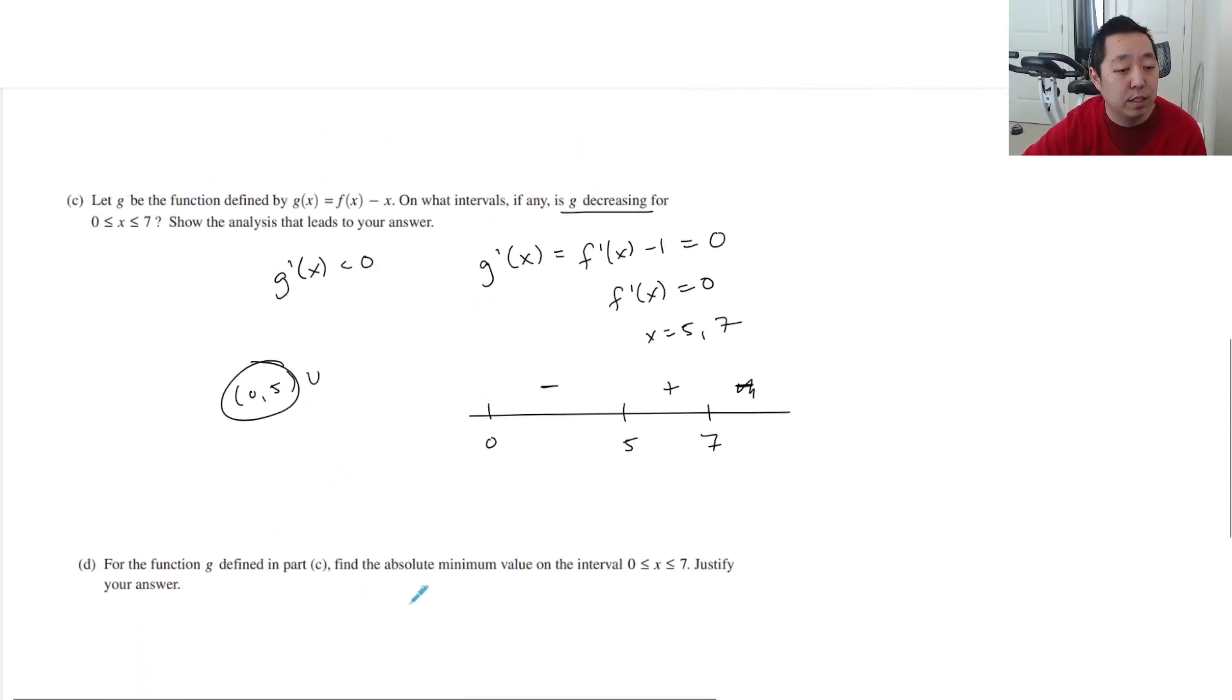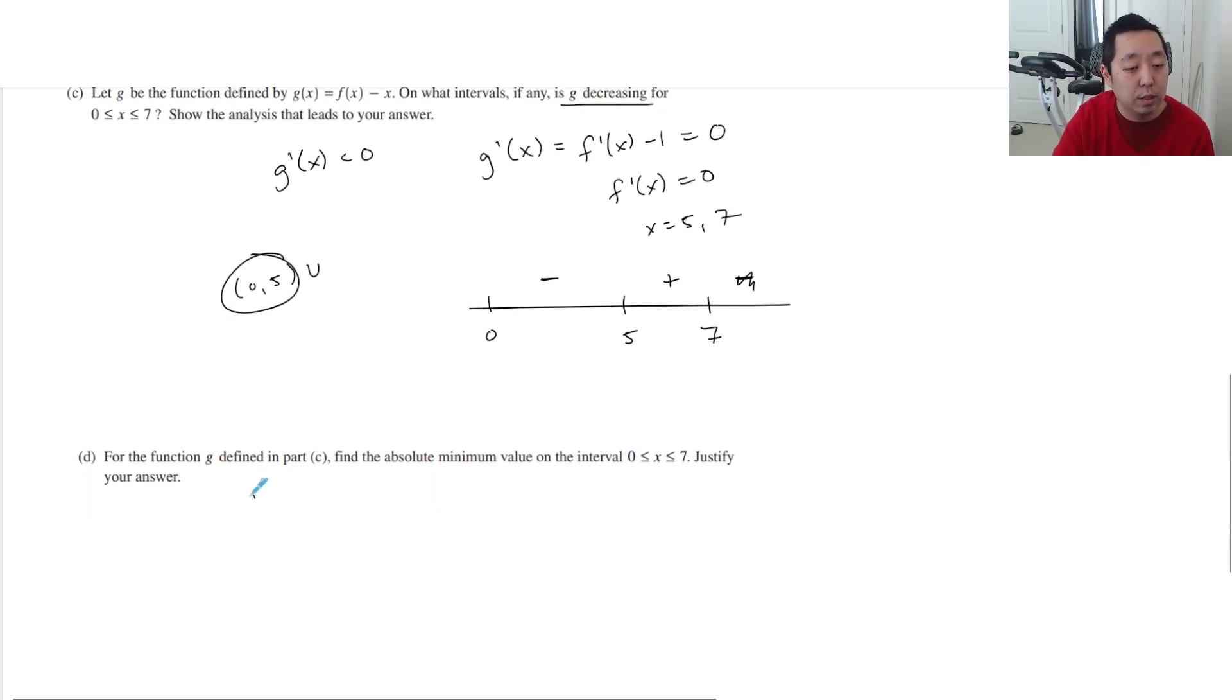For the function defined in part c, find the absolute minimum value of this interval. So what we want to do is we want to compute g. We want to do a candidates test for absolute value. So we always want to check the endpoints, 0 and 7. We want to check any critical points. And we already found where the critical points are. That happens at 5 or 7. Only 5, really, that matters. So I want to compute all of these. I want to compute g of 0, I want to compute g of 7 and g of 5.